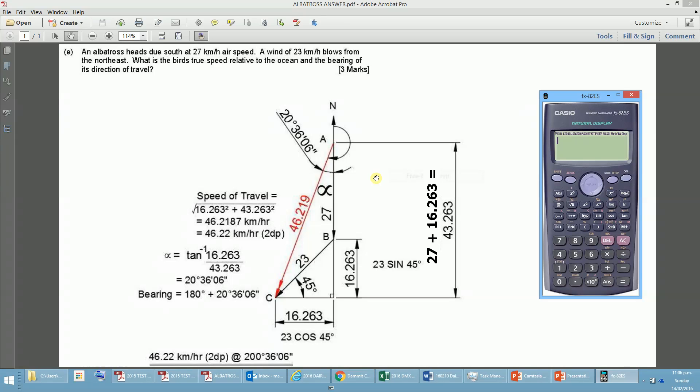So one of the things that we're able to do in these types of diagrams is to represent the airspeed with a vector. And this vector here AB represents the airspeed of 27 kilometers per hour heading due south. So we can see it starts at A and goes to B. Now the wind blowing from the northeast, which is across here at an angle of 45 degrees northeast,